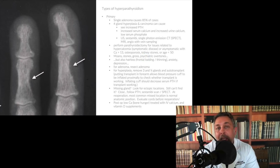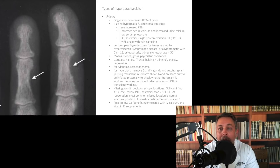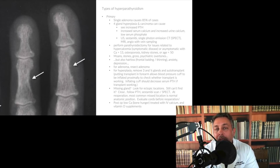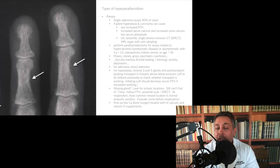For adenoma, you resect the adenoma. For hyperplasia, you remove three and a half glands and auto-transplant the remaining half gland into the forearm — typically — or into the neck in the sternocleidomastoid. Putting it in the forearm is useful because if there's a recurrence postoperatively, you can inflate the blood pressure cuff proximally, and PTH — due to its short half-life — will disappear quickly. This lets you rule out peripheral parathyroid function and confirm something must be left in the neck. Inflating the blood pressure cuff will decrease serum PTH and demonstrate the transplant is working.